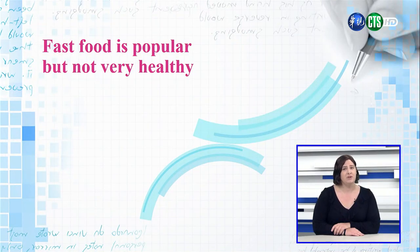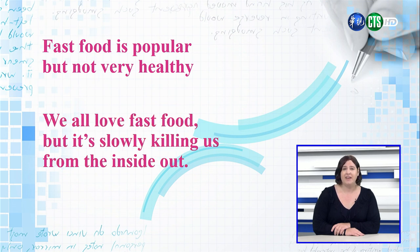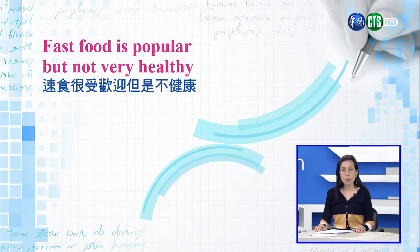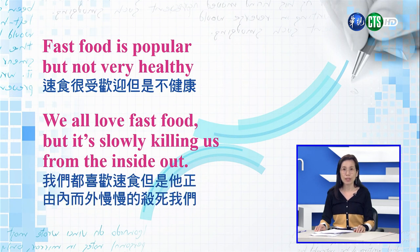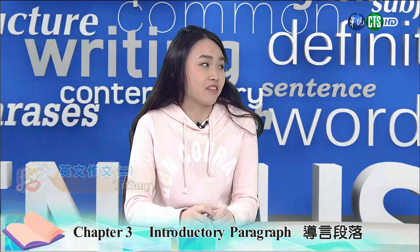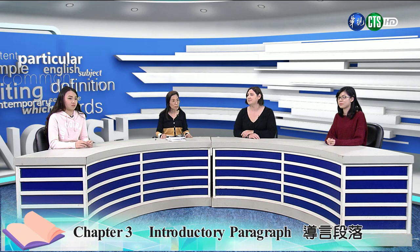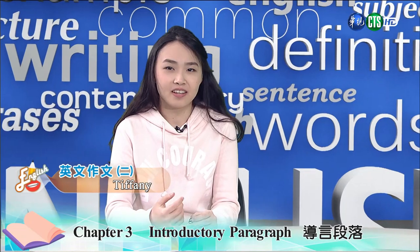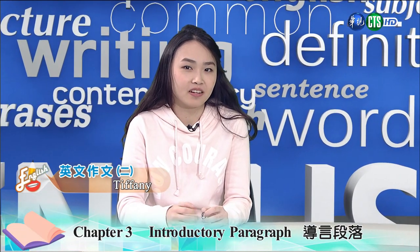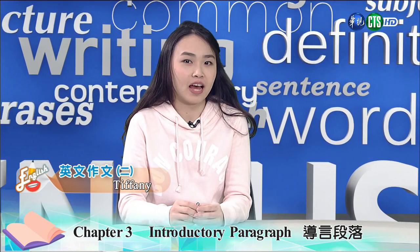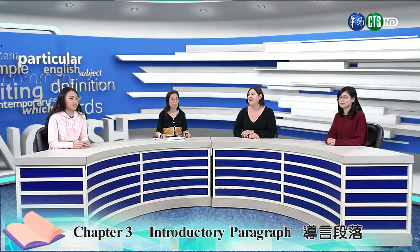Let's look at the example of two possible sentences in the book. The first: 'Fast food is popular, but not very healthy.' And the second sentence: 'We all love fast food, but they are slowly killing us from the inside out.' 但是他们由内而外地慢慢地杀死我们。你们觉得这两个句子哪一个对你是比较有吸引力的呢？ Definitely, it's the second one. 当然是第二句。I agree with her. Can you tell me what makes it a better hook? 那你能不能告诉我说为什么它能比较吸睛呢？I'm not sure actually, but 'killing us from the inside out' seems more powerful than 'unhealthy.' 我觉得从内而外杀死我，听起来好像比不健康还要更有力。